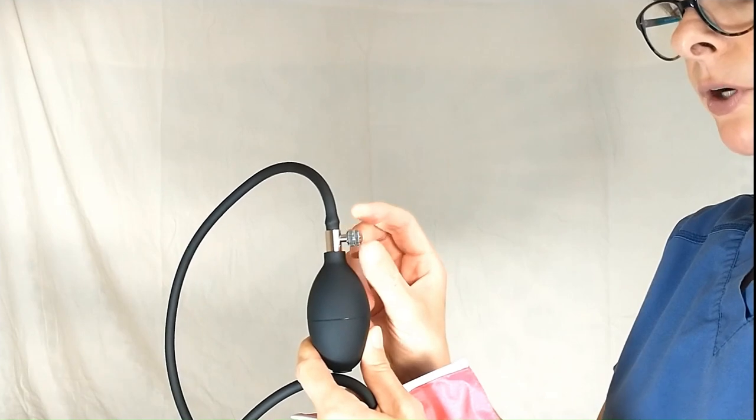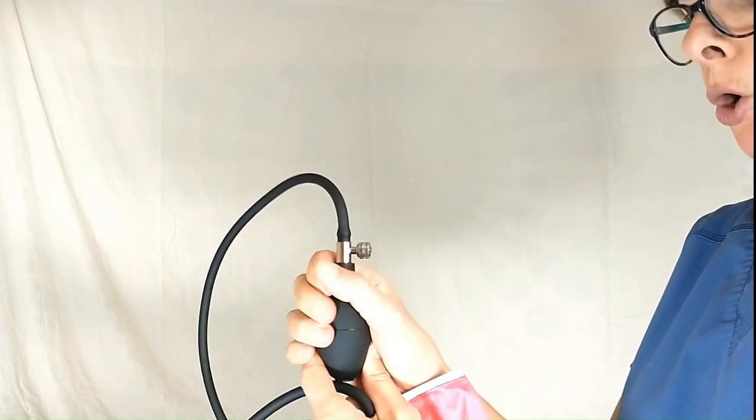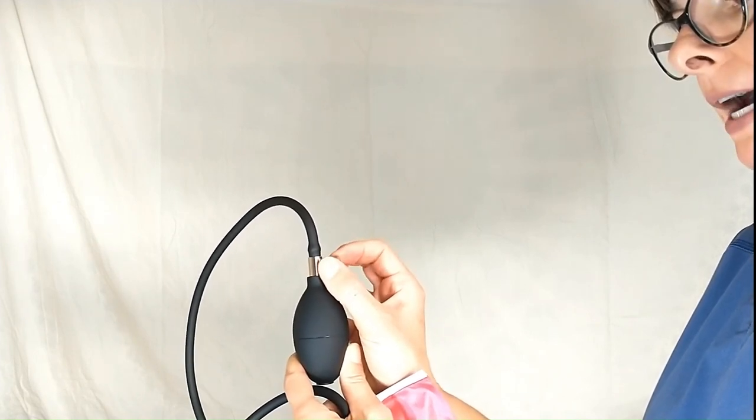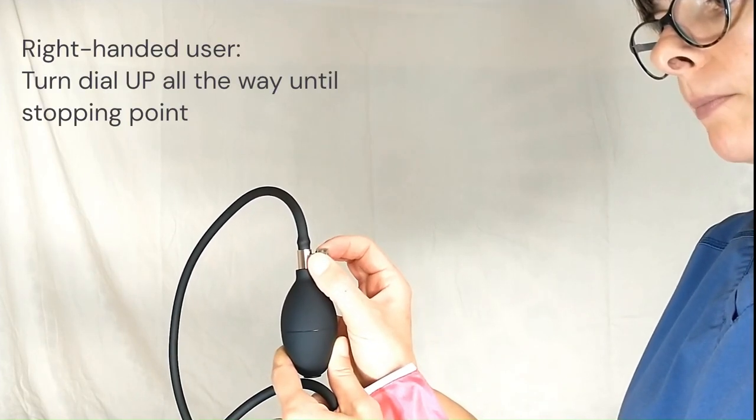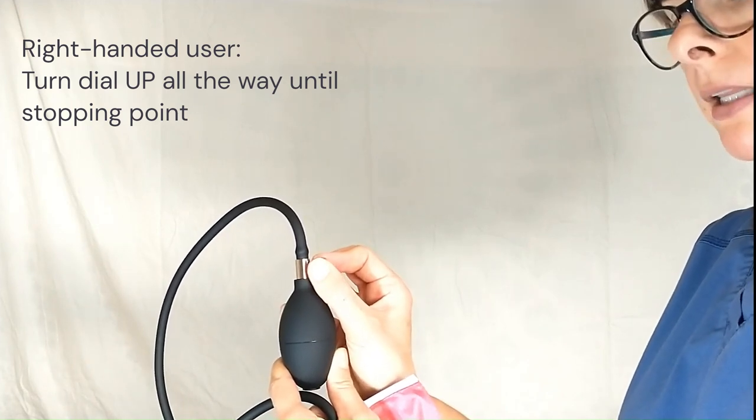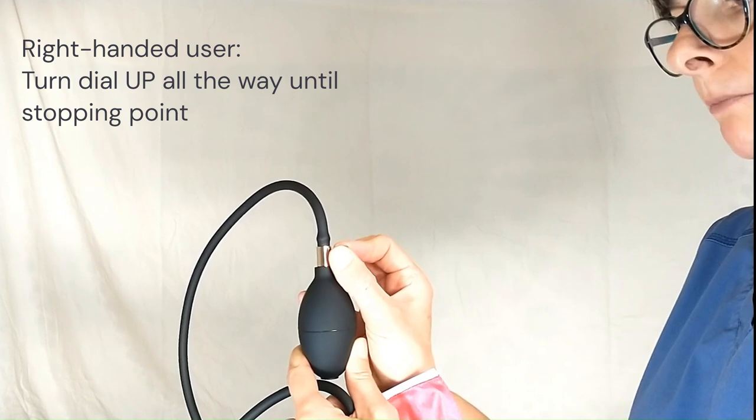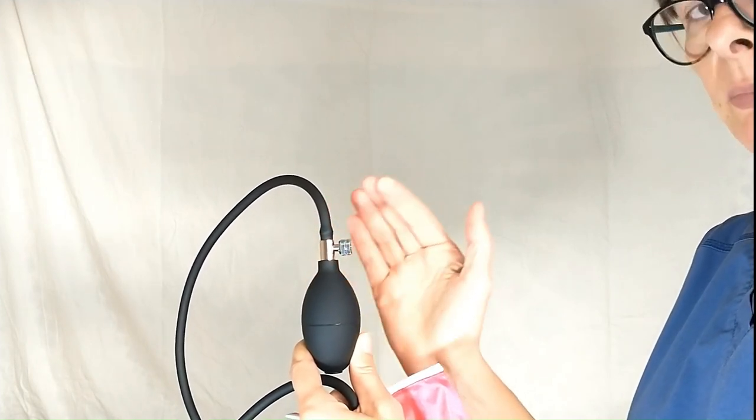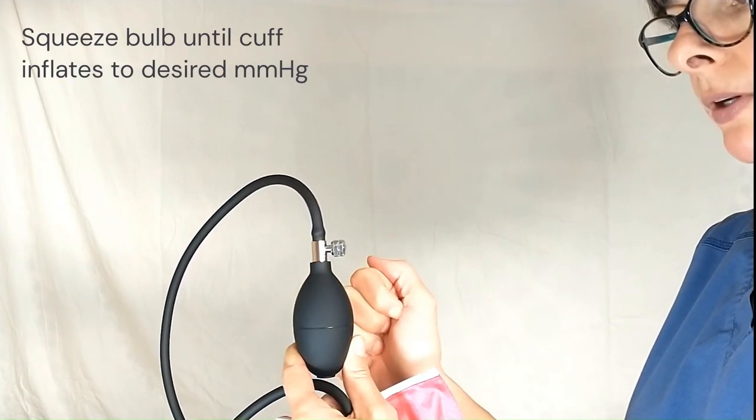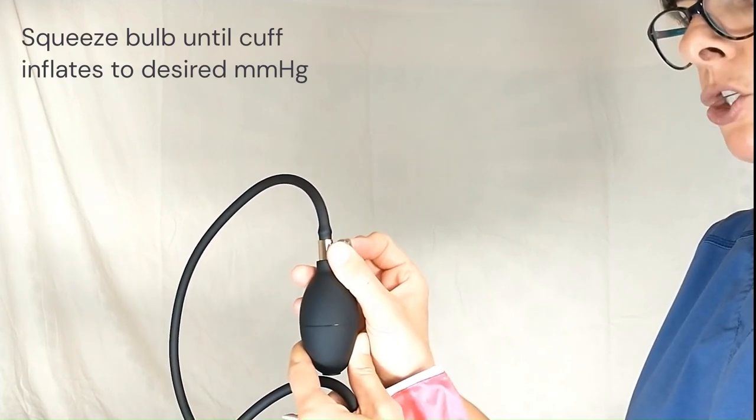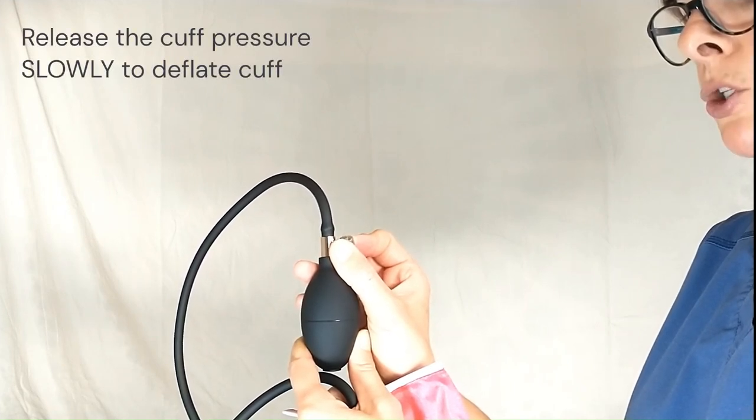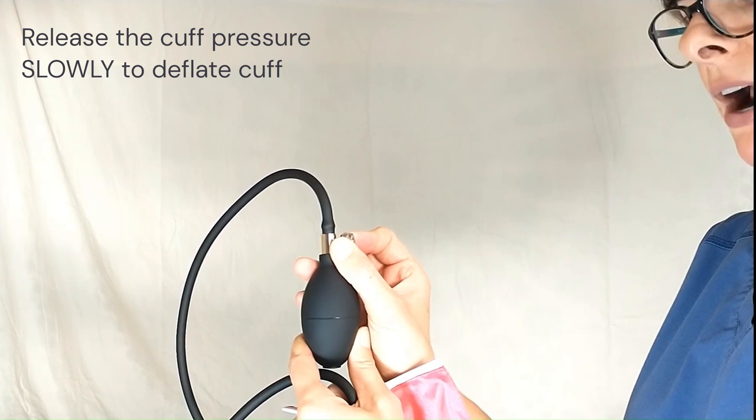Now this dial, if you're right-handed, I would recommend holding it in your right hand and then having the control of the dial with your index finger and thumb, and then dial it up all the way until it comes to the stopping point. Once it comes to the stopping point, that means that now it's ready to be inflated and you can squeeze the ball to inflate the cuff, and then gently move it with the index finger and thumb to deflate the blood pressure cuff.